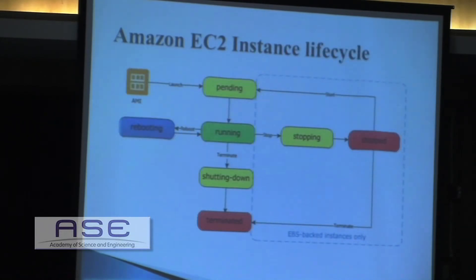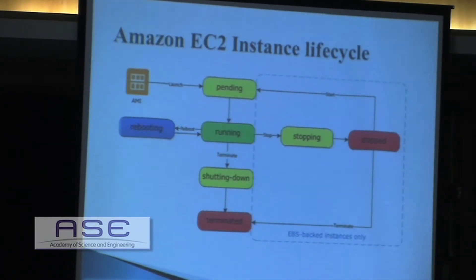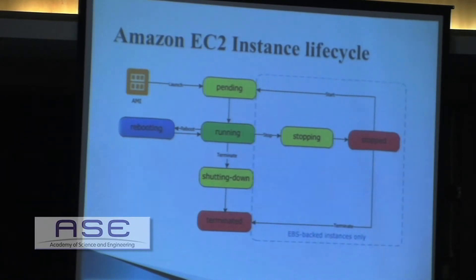This is the EC2 instance lifecycle. When you launch an AMI instance, it enters a pending state and then starts running. When you stop the instance — which is how we forcefully migrated the instance — it goes to the stopped state. When you start it back, it returns to pending and then running, and you will be assigned a new IP, new DNS, and new MAC address, indicating the instance was migrated from one physical machine to another. Going from running to terminate means you delete the instance completely.